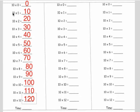10 times 0 equals 0. 10 times 1 equals 10. 10 times 2 equals 20. 10 times 3 equals 30. Then 10 times 4 equals 40.